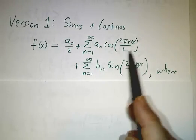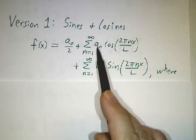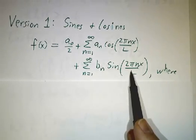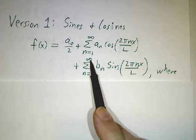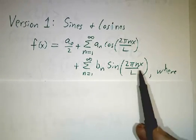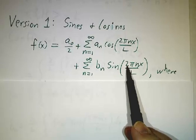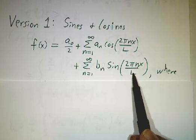Then we have a sum of cosine terms, where n goes from 1 to infinity, and a sum of sine terms, where n goes from 1 to infinity. The frequencies are all multiples of 2π over L.